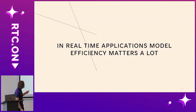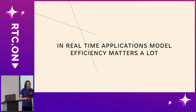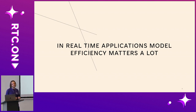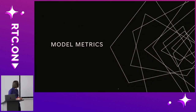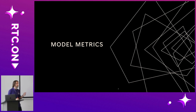In real-time applications, model efficiency matters quite a lot. That's not so obvious in scientific literature, where you can often find that papers focus primarily on scoring higher on benchmarks, not really on making the model go faster to be applicable in real-time. So let's go over some model metrics that you can find in scientific literature — they often promise to reflect efficiency, but that's not always the case.